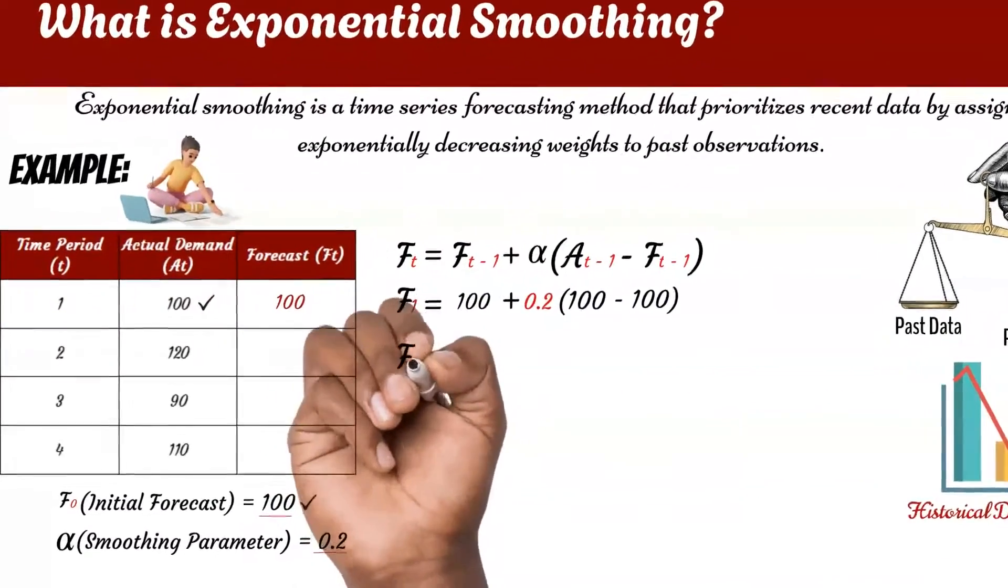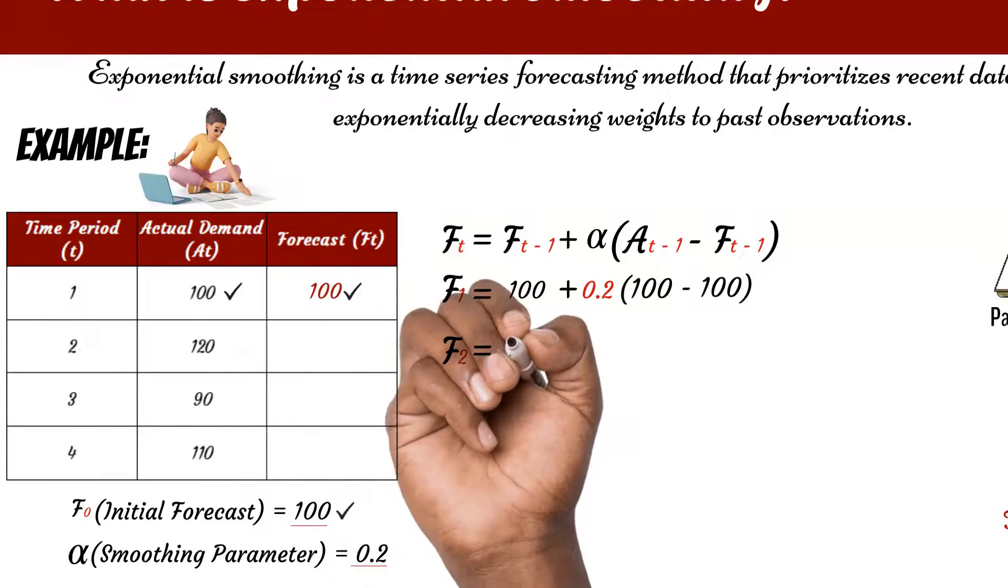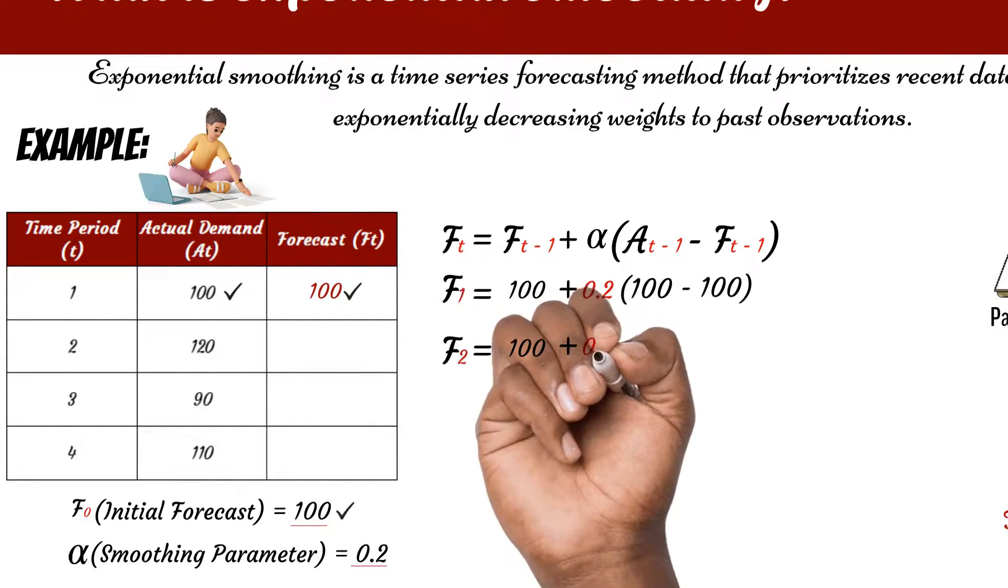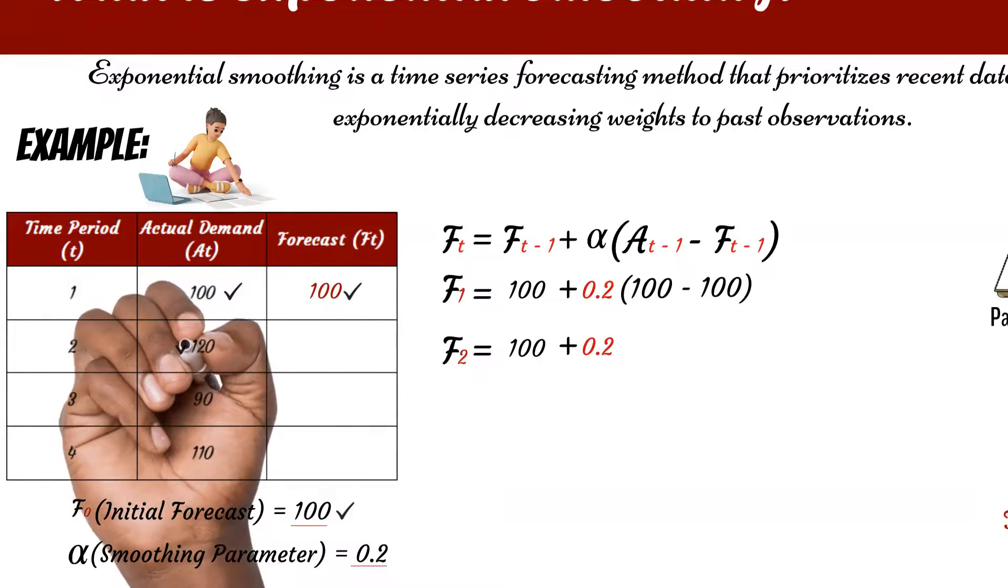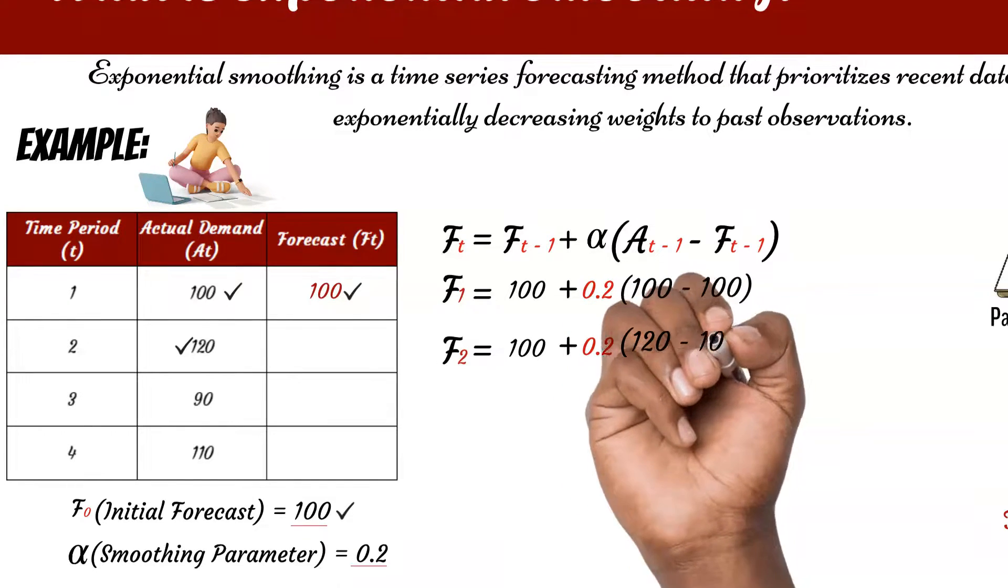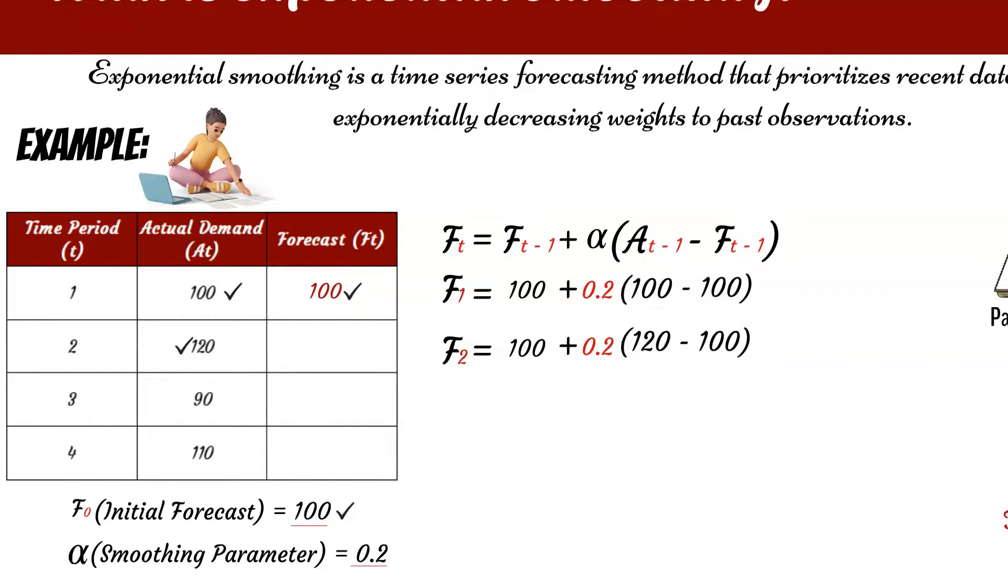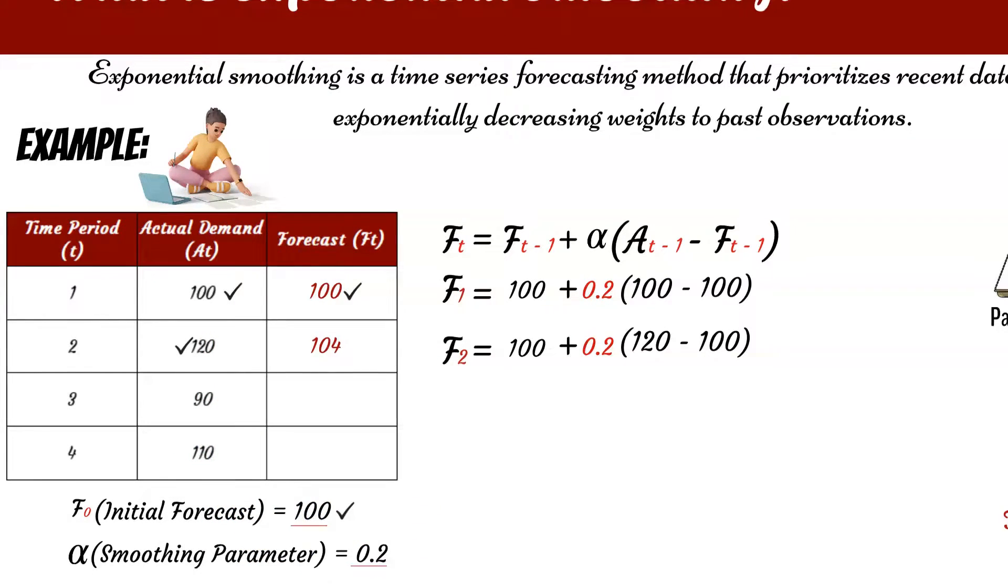For period 2, this is calculated by adding the forecasted demand for period 1, which is 100, to the 0.2 smoothing. We then multiply this by the actual demand for period 2, which is 120, minus the forecasted demand from period 1, which is 100. This should give us 104 as the new forecasted demand.